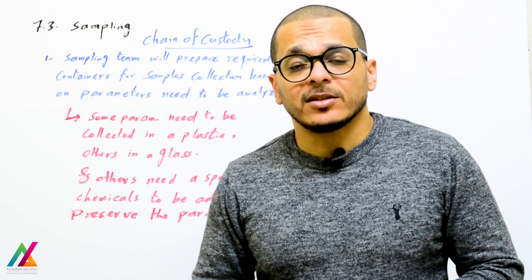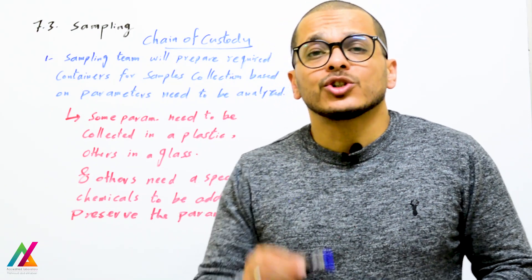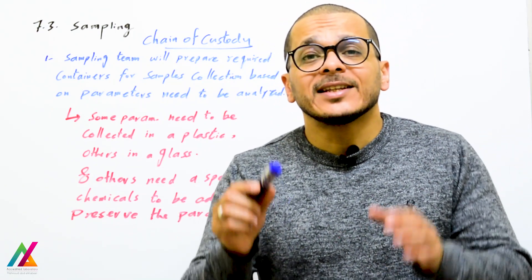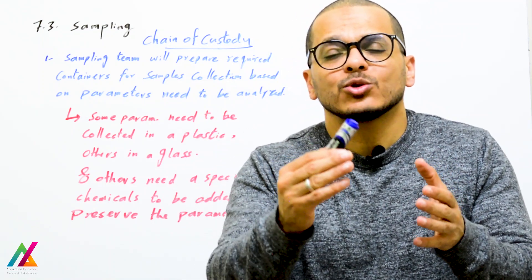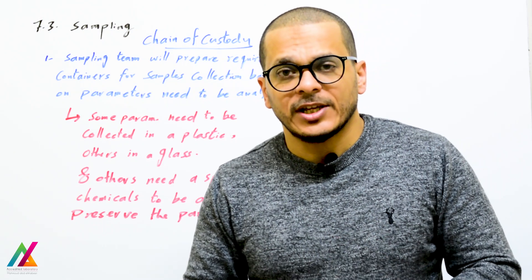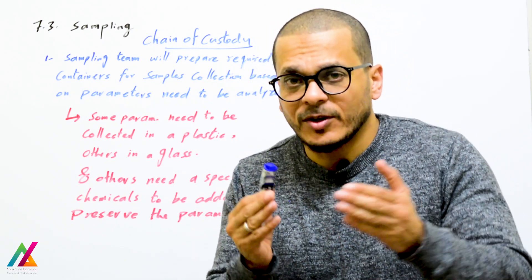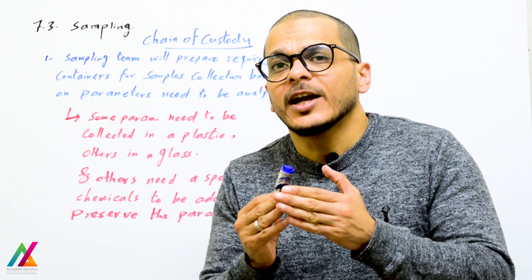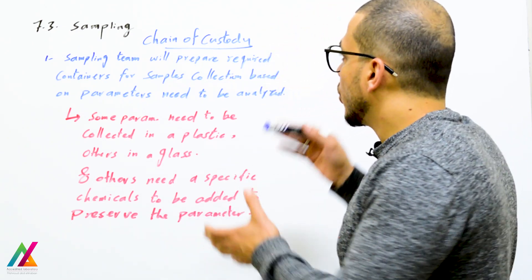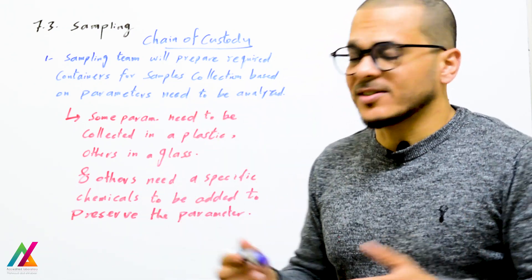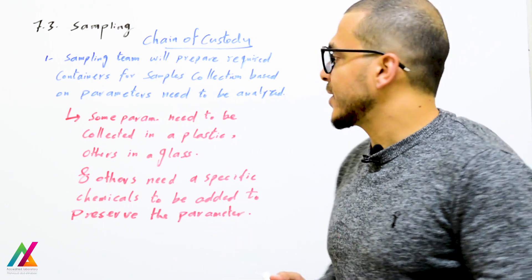The sampling plan shall be designed so that the resulting data will contain a representative sample of the parameter of interest. To keep the sample representative, you shall follow the sampling plan and specific procedure for sample collection according to the guideline you use. If you have a reference method, you will find how to collect the sample for each specific parameter.